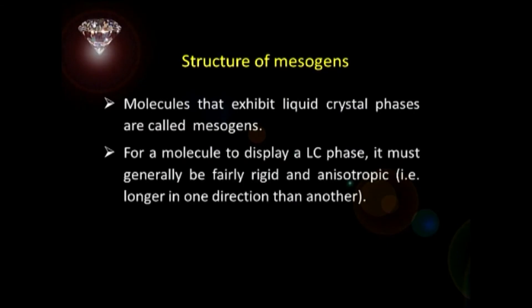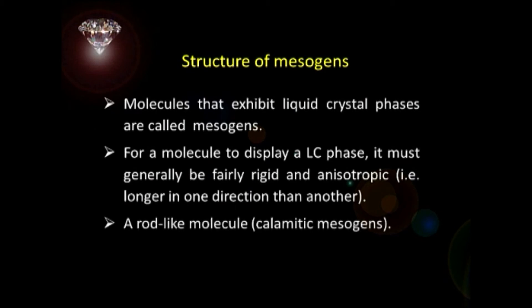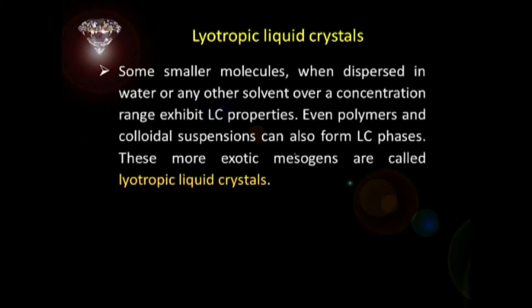For a molecule to display a liquid crystalline phase, it must generally be fairly rigid and anisotropic — that means longer in one direction than another. A rod-like molecule that shows liquid crystalline behavior is called a calamitic mesogen. Lyotropic liquid crystals, on the other hand, are smaller molecules. When these molecules are dispersed in water or any other solvent, over a concentration range they exhibit liquid crystalline properties. Even some polymers and colloidal suspensions can also form liquid crystalline phases.